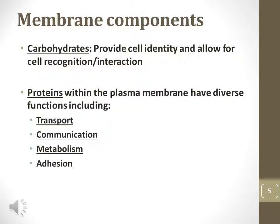Carbohydrates fixed in the plasma membrane function as identifiers of a cell. Every organism has unique carbohydrate identifiers. These carbohydrates allow cells to recognize and interact with each other. Proteins fixed in a plasma membrane may have different functions, including transport of materials into and out of the cell, communication between cells, metabolism involving chemical reaction, and adhesion of a cell to a surface or an adjacent cell.